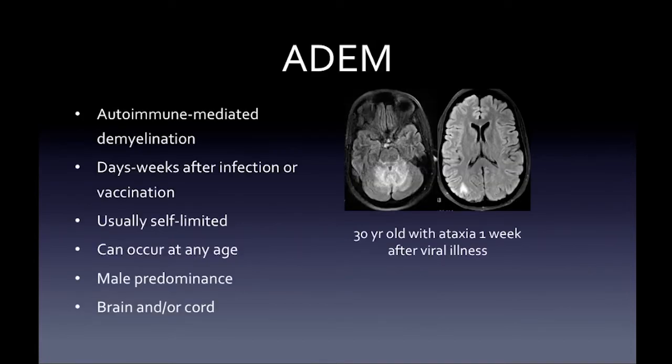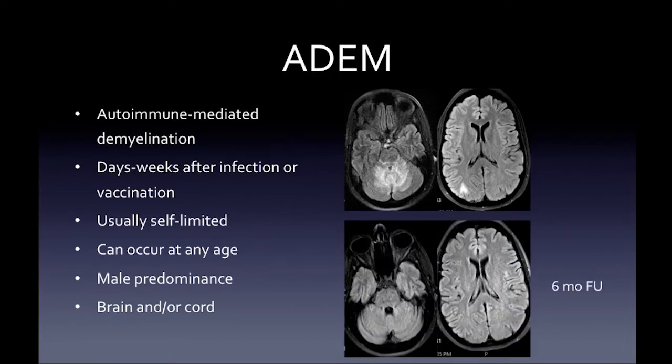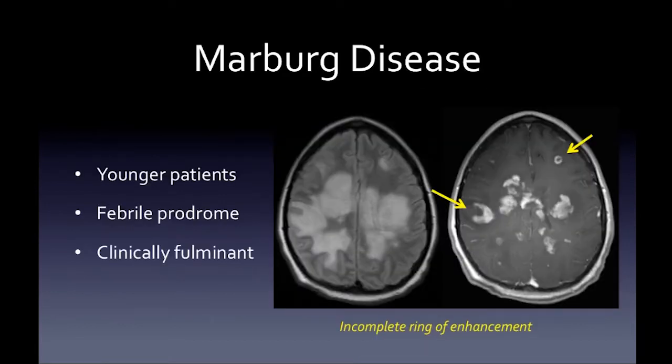Now let's cover variants of demyelinating disease. ADEM — autoimmune-mediated demyelination — occurs days to weeks after an infection or vaccination, is usually self-limited, and can occur at any age with male predominance. In this case, a 30-year-old with ataxia and cerebellar signs one week after a viral illness showed lesions in the posterior fossa and supratentorial regions that largely resolved on six-month follow-up, confirming the self-limited nature.